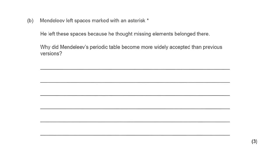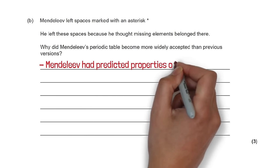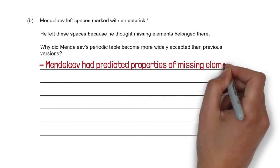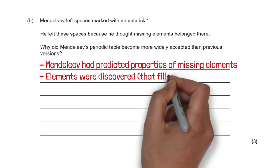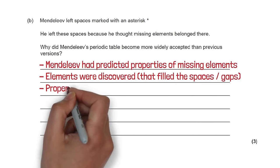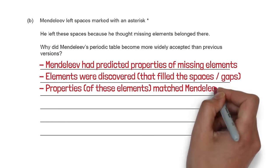The second question talks about Mendeleev leaving spaces with asterisks because he thought missing elements belonged there. Why did this periodic table become more widely accepted than previous versions? Mendeleev had predicted properties of missing elements. These missing elements were discovered and filled the spaces he left, and the properties matched his predictions.